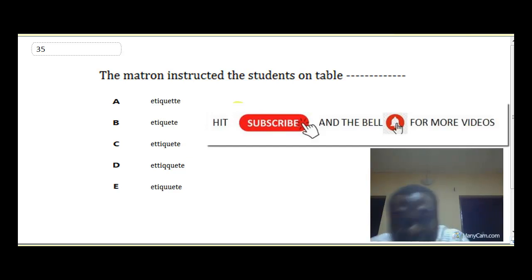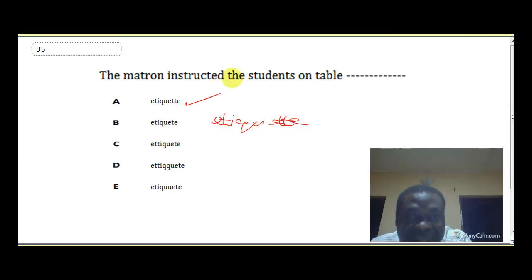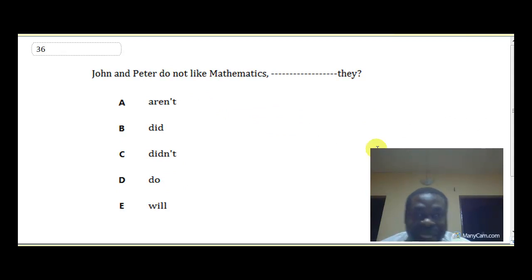Question 36: John and Peter do not like mathematics, dash they. This is the same question on question tags we have done out. We have a plural subject, okay? And which pronoun correlates or corresponds to a plural subject? It is they. Okay, they corresponds to these. Now, do not like mathematics, is this negative or positive? It is negative.